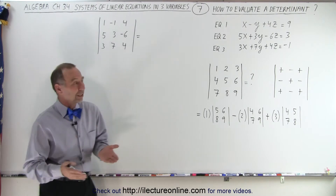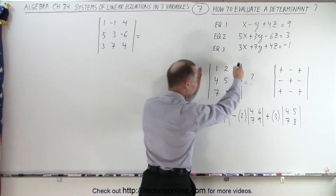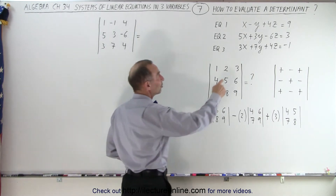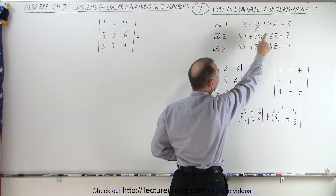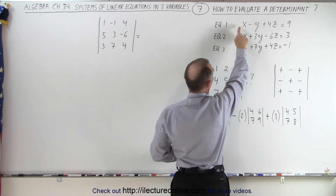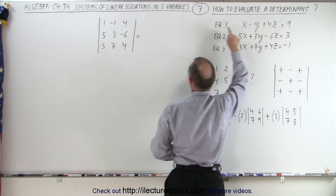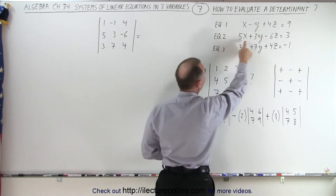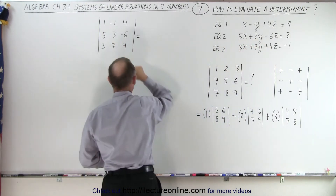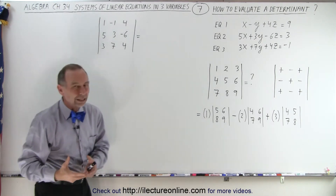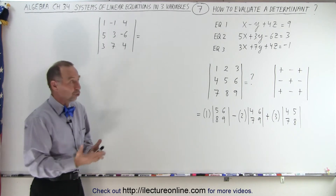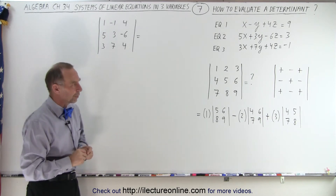What is a determinant? It turns out it's a bunch of numbers between two vertical lines, and essentially what it typically represents is the coefficients of the x, y, and z variables inside the three equations. For example, we have 1, negative 1, and 4; then 5, 3, and minus 6; then 3, 7, and 4 — placed into the determinant, which you then evaluate.